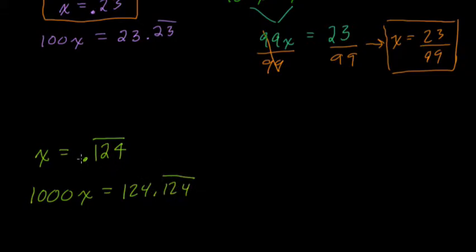Multiplying by 10 moves our decimal once to the right, by 100 twice, and by 1,000 three times to the right. So if we have three repeating digits, we want to move our decimal three times to the right.